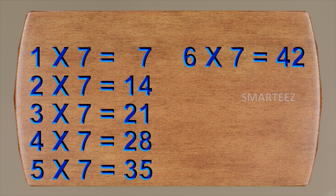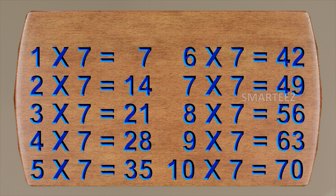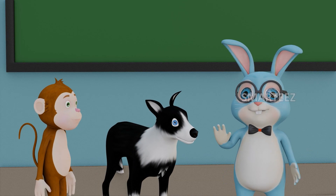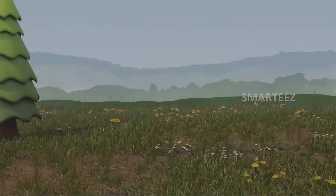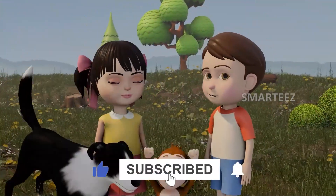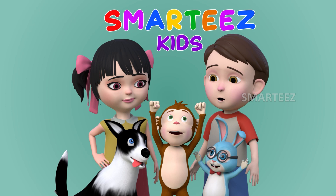This table of seven will keep going: six times seven is forty-two; seven times seven is forty-nine; eight times seven is fifty-six; nine times seven is sixty-three; and ten times seven is seventy. That's all we have for now. See you soon! Bye!